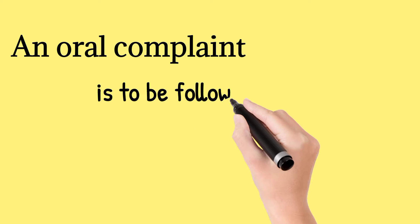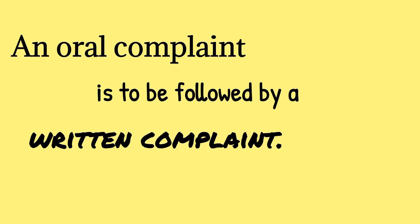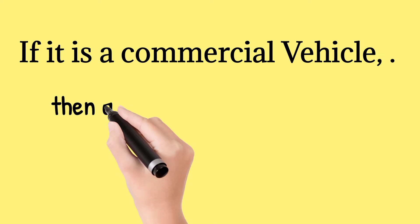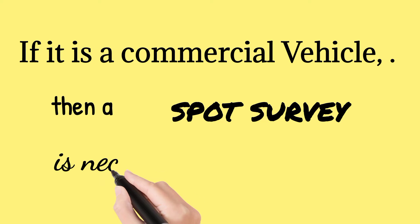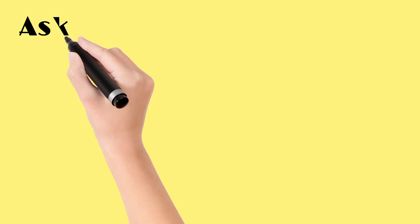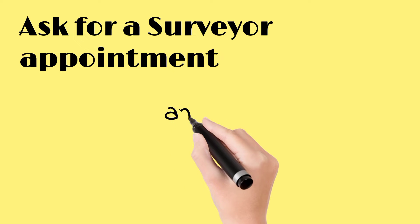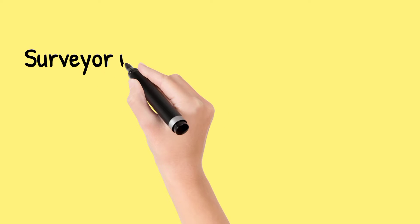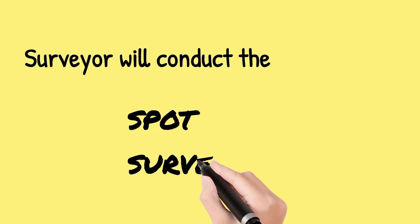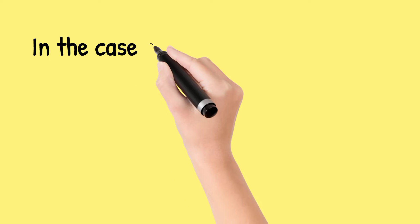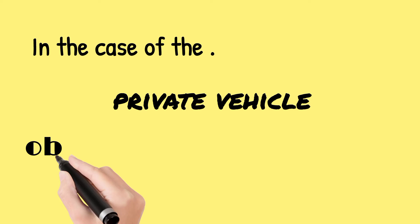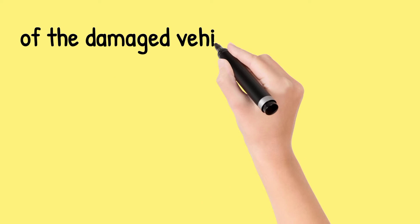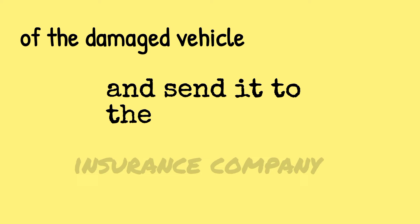An oral complaint is to be followed by a written complaint. If it is a commercial vehicle, then a spot survey is necessary. Ask for a surveyor appointment and collect his contact number. The surveyor will conduct the spot survey. In the case of a private vehicle, obtain the repair estimate of the damaged vehicle and send it to the insurance company.